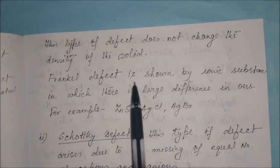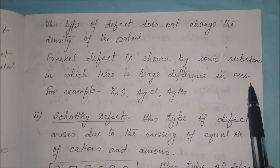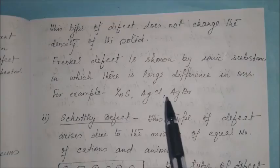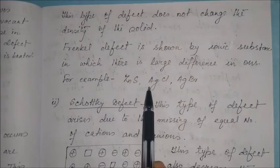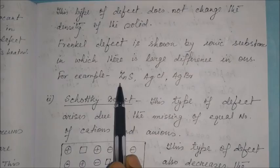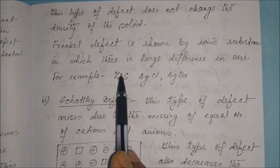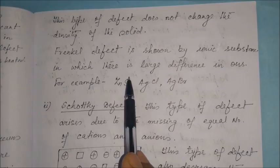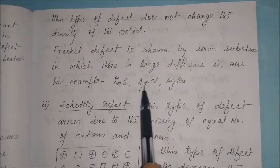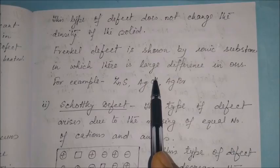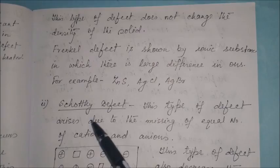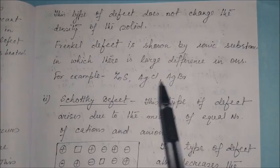Frenkel defect is shown by ionic substances in which there is a large difference in the size of cation and anion. For example, zinc sulfide (ZnS): Zn²⁺ is very small compared to S²⁻. Similarly, in AgCl, the cation is very small compared to the chloride ion. Other examples include silver bromide (AgBr). Frenkel defect occurs in ionic substances where there is a large difference between cationic and anionic size.